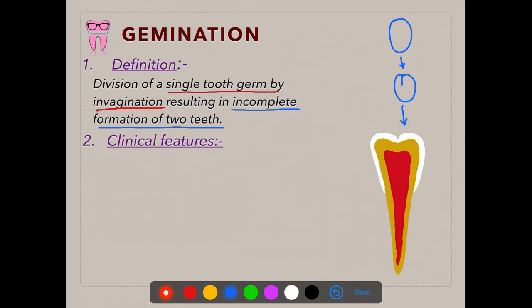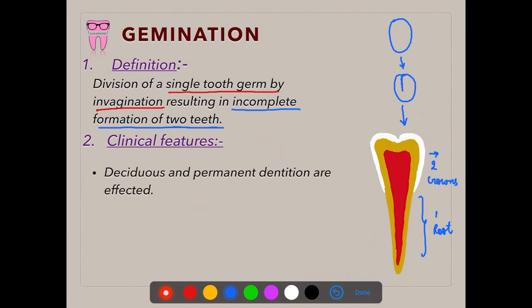In germination, as you can see, there are two crowns but the root is one. The single tooth germ, because of invagination, forms into an incomplete two teeth. There is no complete formation of two separate teeth.